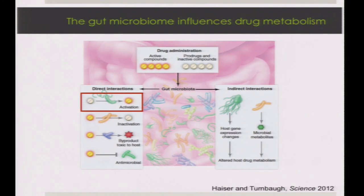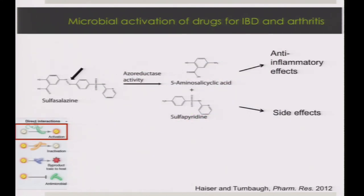For example, in drug activation there's a famous example: sulfasalazine. This drug is used for inflammatory bowel disease and is conveniently activated by members of the gut microbiota, which proves useful because you want it to locally reduce inflammation at the site of the problem. You administer this prodrug, which has an azo bond shown by the arrow. Azoreductases expressed in the microbiome cleave the drug in half, yielding the active metabolite 5-ASA and, less conveniently, sulfapyridine, which is thought to contribute to the drug's side effects.